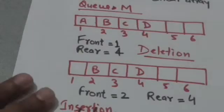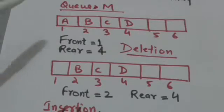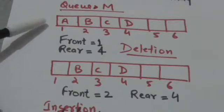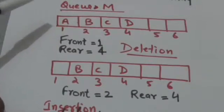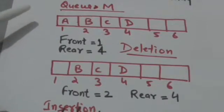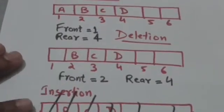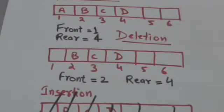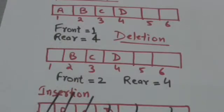When we delete an element from queue M, the value of variable front will be increased by 1. Since A is the front element, only A can be deleted from queue M. So when A is deleted, the value of variable front will become 2, and now B is the front element of queue M.